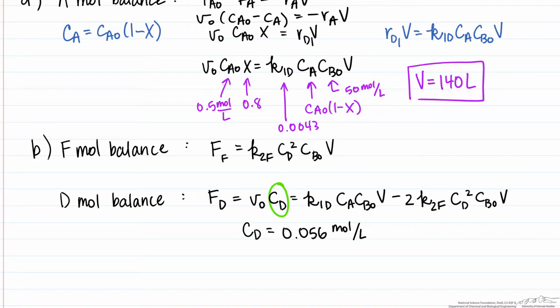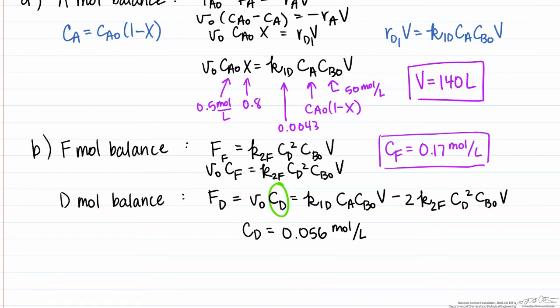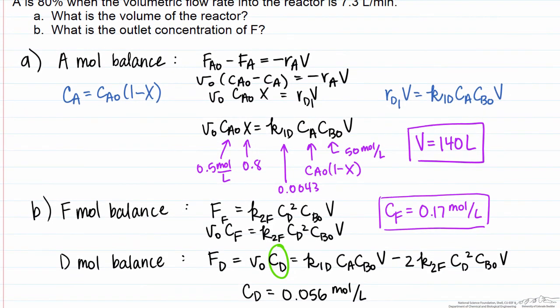At 80% conversion, the concentration of A is 0.10 moles per liter. Now we have the information needed to solve the equation for the molar flow rate of F out, which equals the total volumetric flow rate times the concentration of F. We know K2F, the concentration of D of 0.056 mol/L, the concentration of B, and the volume from Part A. Our only unknown is CF exiting the reactor, and we find that it equals 0.17 moles per liter.